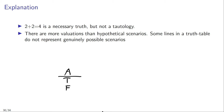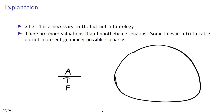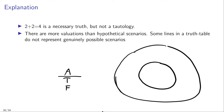For example, '2 plus 2 equals 4' is a necessary truth but not a tautology. What explains this? The core explanation is that there are more valuations than hypothetical scenarios. If this big circle represents all possible valuations, the hypothetical scenarios are a proper subset of that.